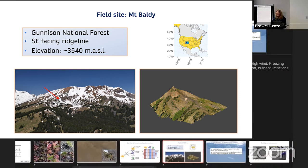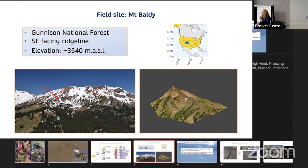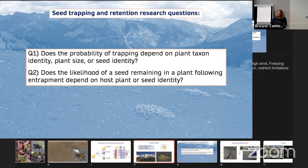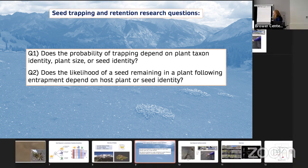Okay, so now to reveal where I work. Some of you might have guesses, but I work in the Rocky Mountains in the Gunnison National Forest. And I work at really high elevation, basically right about treeline, 3,500 meters above sea level. You can see I'm right at that red dot there. And so for my research and exploring this first insight, I wanted to ask two questions. One, does the probability of trapping depend on the plant taxon doing the trapping, plant size, or the seed identity? And then also question two, the probability of remaining in a plant following entrapment, does that depend on these attributes of both the plants and the seeds?